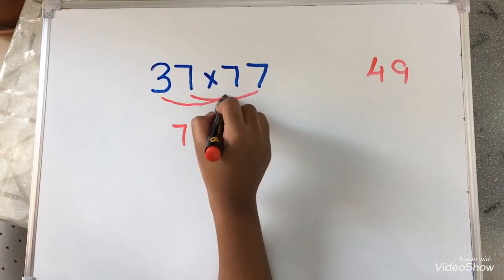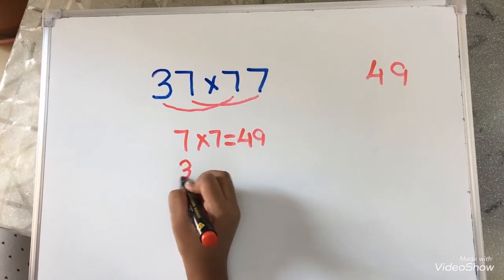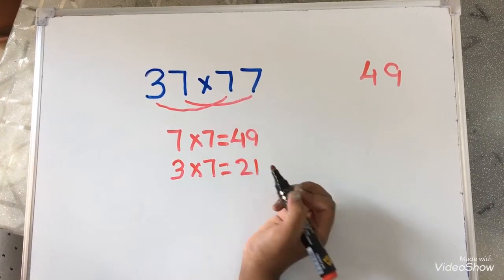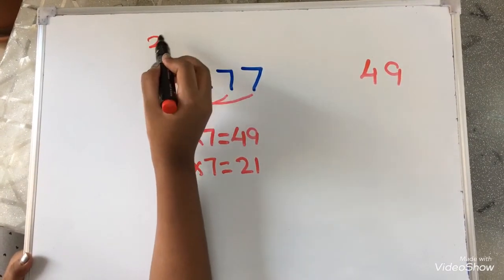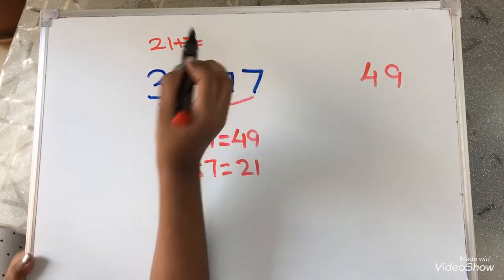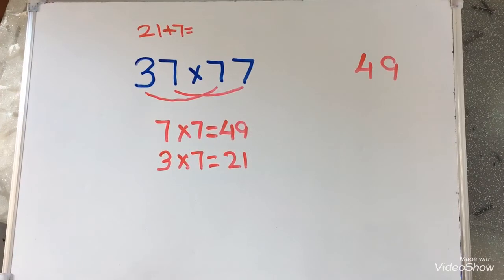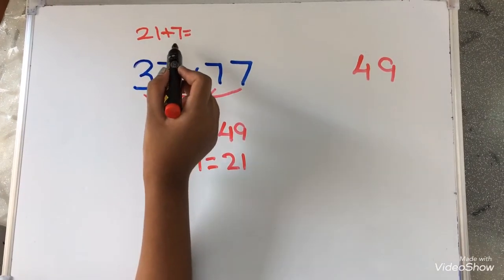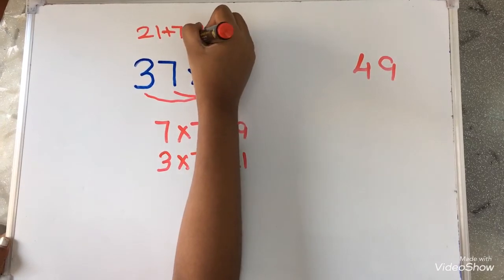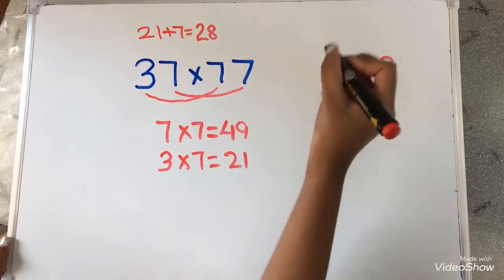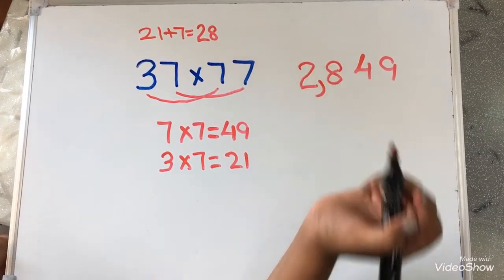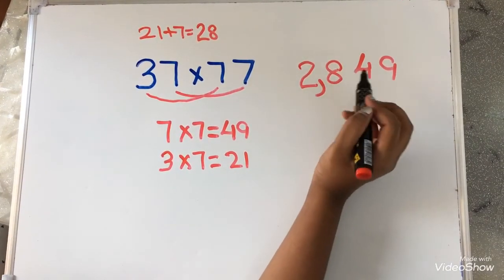Now, I am going to add 21 plus 7. 21 plus 7 equals to 28. I am going to write 28 over here. The answer is 2849.